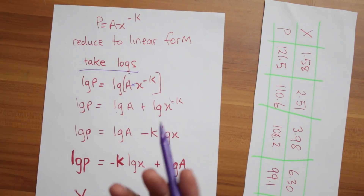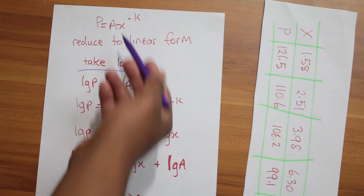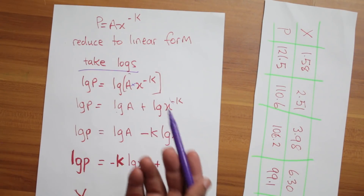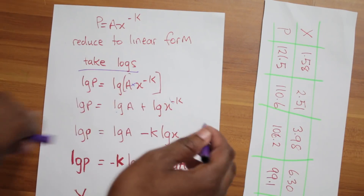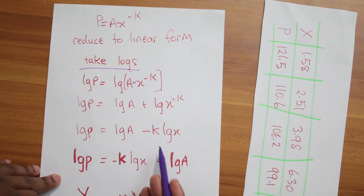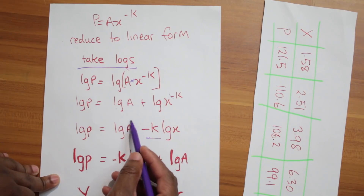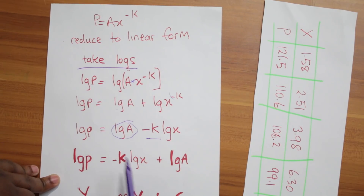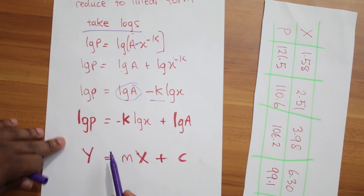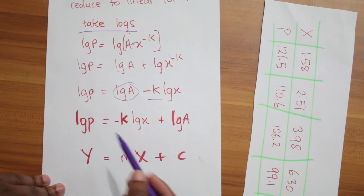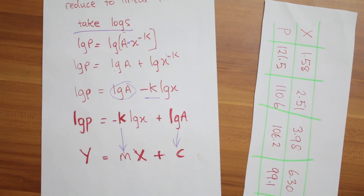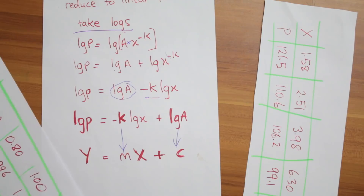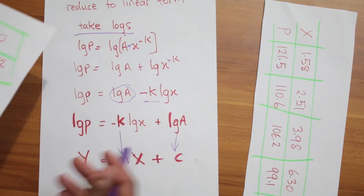There's maybe a 70% chance you're going to do this same technique in your exam tomorrow, so make sure you have it: take logs on both sides, split them, bring down the index. This constant k and the whole log of a is another constant, so rearrange it to look like y equals mx plus c. Now k represents m and log of a represents c.